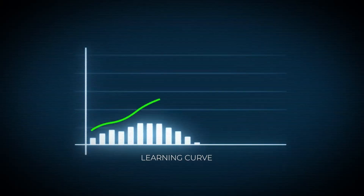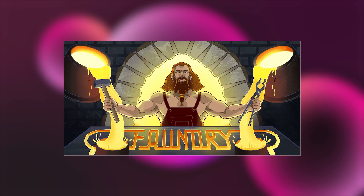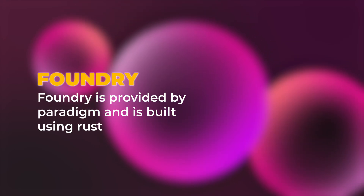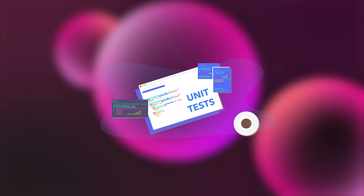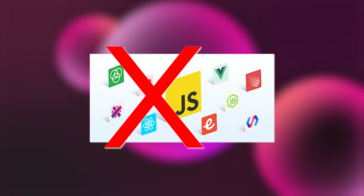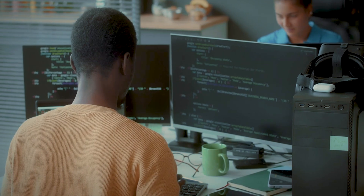For people transitioning from Web2 to Web3, the learning curve is easier with Hardhat. On the other hand, we have Foundry, provided by Paradigm and built using Rust. Interestingly, instead of JavaScript, Foundry uses Solidity to write tests. This is great if you want to stick to the Ethereum side of smart contract development without any extra layer — you write your unit tests and your smart contracts all in Solidity. Foundry is also known for being fast and executing tests more quickly than Hardhat.